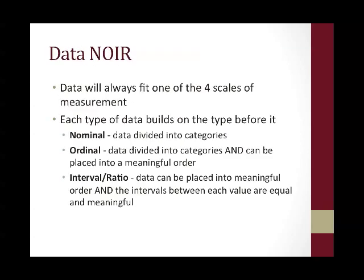Data will always fit into one of four scales of measurement, and each type of data builds on the type before it. Nominal data is data that's divided into categories. Ordinal data is divided into categories and can be placed into a meaningful order. Interval ratio data — which we will lump together, and I'll explain this later — can be placed into meaningful order, and the intervals between each value are equal and meaningful.